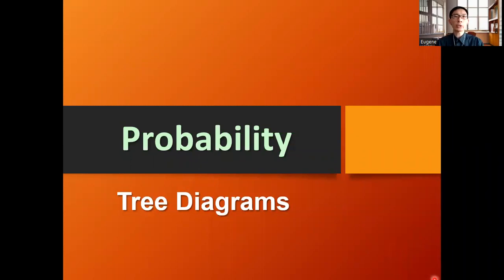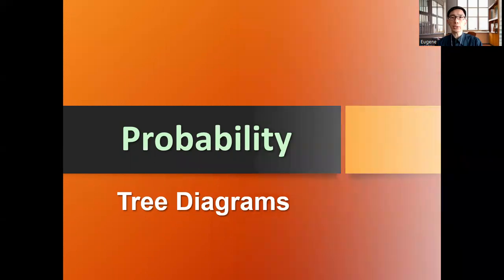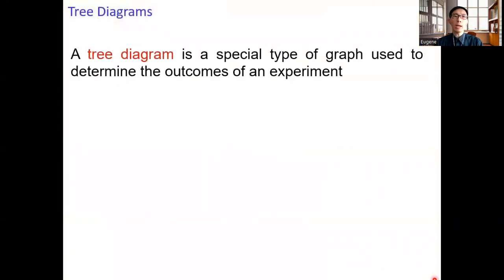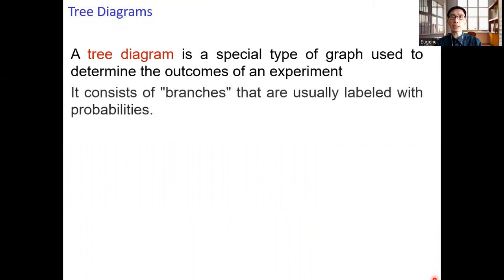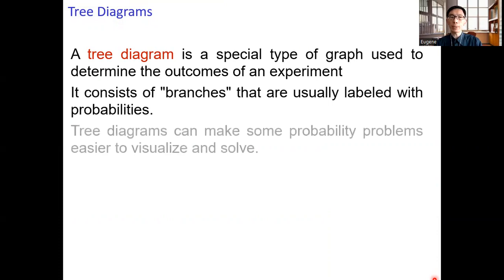In this video we talk about using tree diagrams in computing probabilities. A tree diagram is a special type of graph used to determine the outcomes of an experiment. It consists of branches that are usually labeled with probabilities. Tree diagrams can make some probability problems easier to visualize and solve.